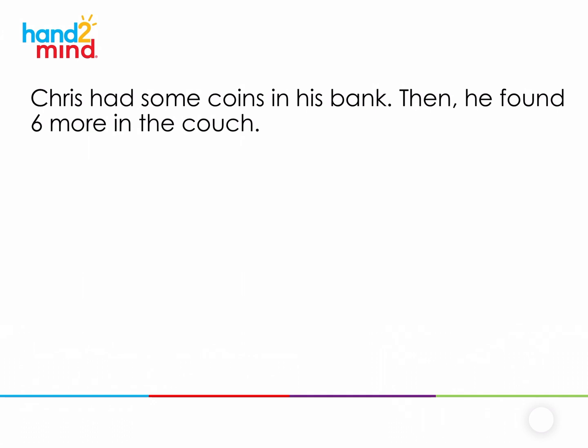Well, we still don't know how many coins he had in his bank, but we do know now that he found six more in the couch. Let's see how the story ends. Chris had some coins in his bank. Then he found six more in the couch. Now he has 10 coins. How did it change?